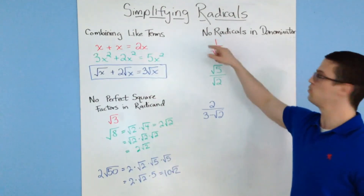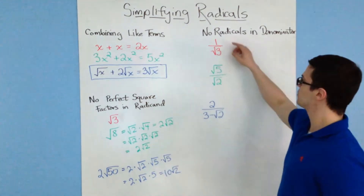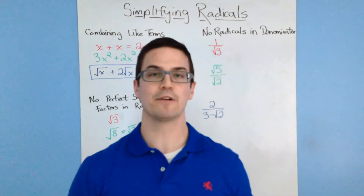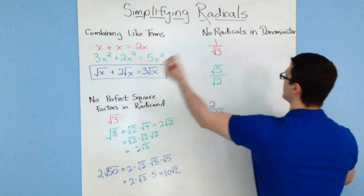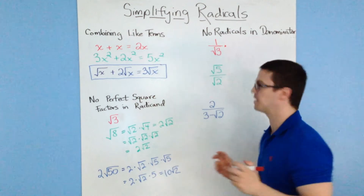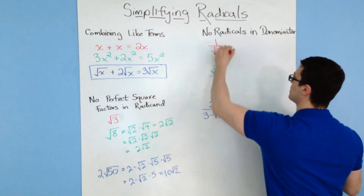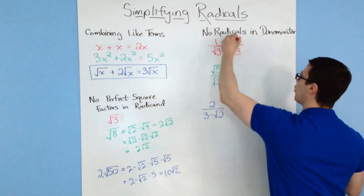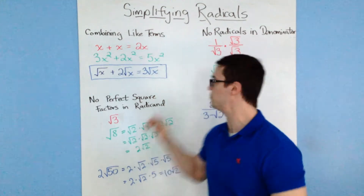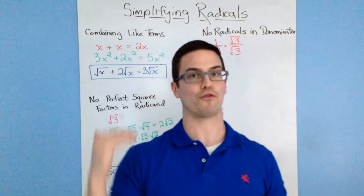Next rule: there are no radicals in the denominator. I have three examples where there is a radical in the denominator. For the first one, we have 1 over the square root of 3. To get rid of that radical in the denominator, we multiply by a fancy kind of 1 — specifically root 3 over root 3. This is technically equal to 1, so you're not actually changing the value; you're just using it to simplify.